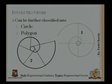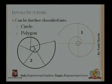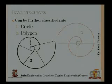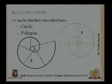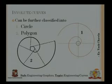Moving on to involute — to understand it, take a cylinder or rod and wind or unwind a string around it. There are two types of involute curves: one based on a circle cross-section and another based on a polygon cross-section, depending on the shape of the cylinder.